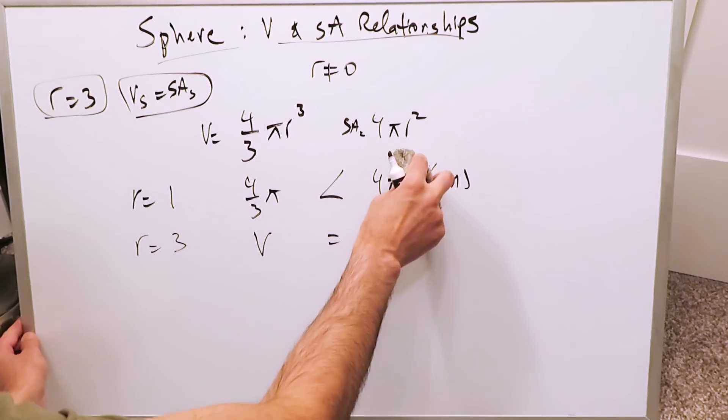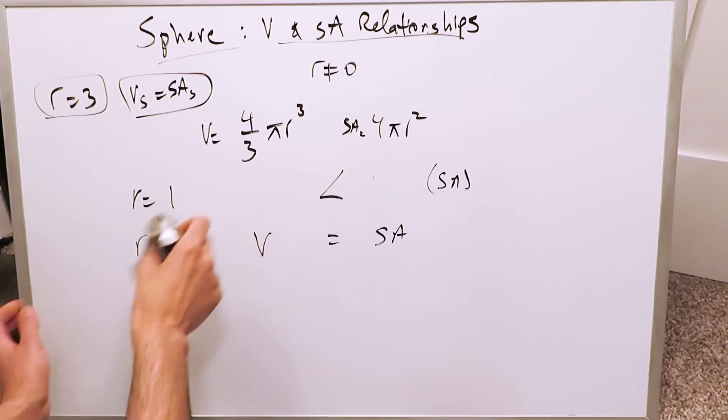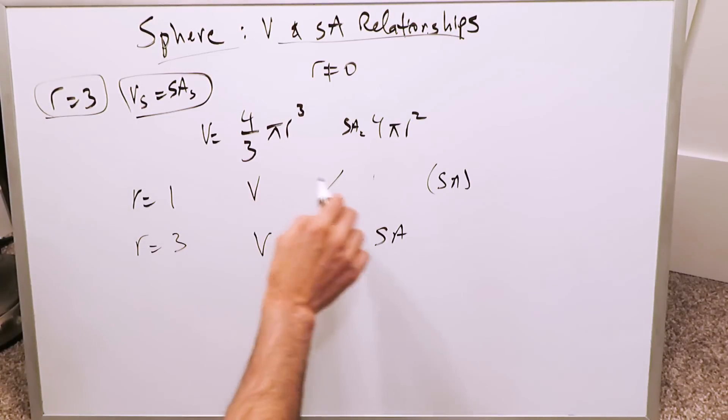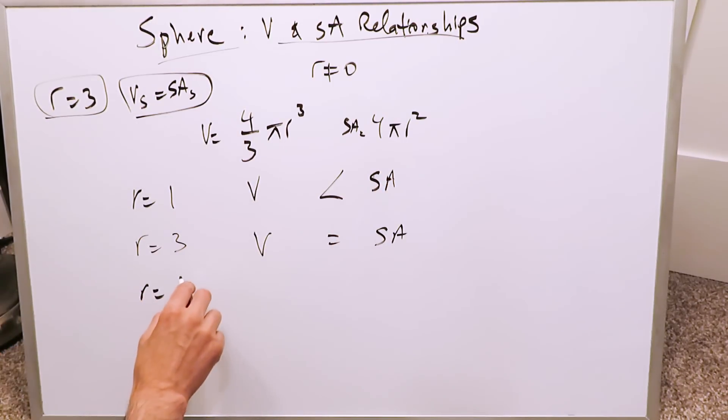So allow me to do some modification here and make things clear. When the radius is equal to 1, the volume is less than the surface area. If radius were equal to, let's say, 3.1, you're looking at 4/3 π × 3.1³. Here you're looking at 4π × 3.1². Which one do you think is larger? Well, think about it in this way.